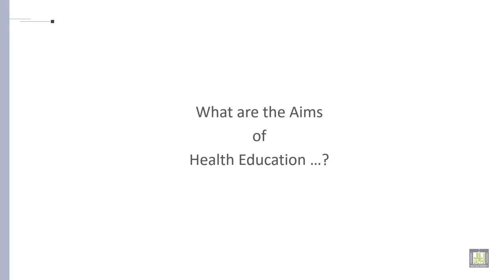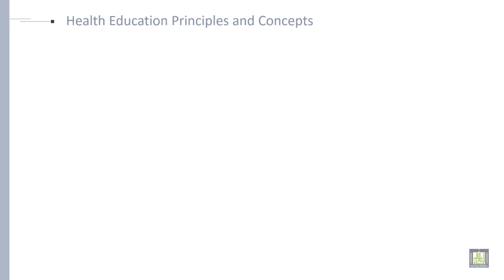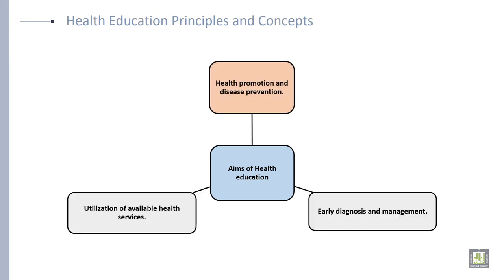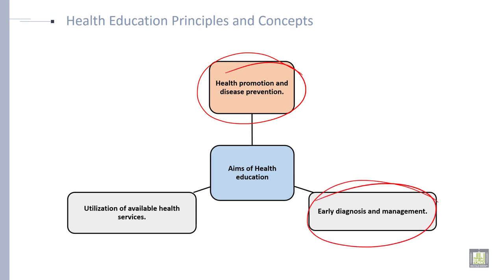What are the aims of health education? The aims of health education are: first, health promotion and disease prevention; second, early diagnosis and management; and third, utilization of available resources, or you can say utilization of available health services.